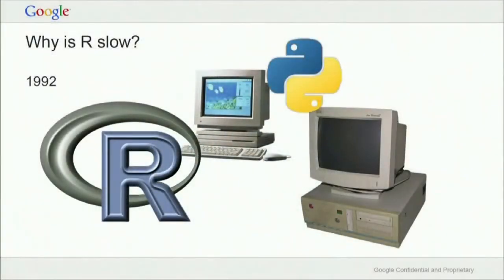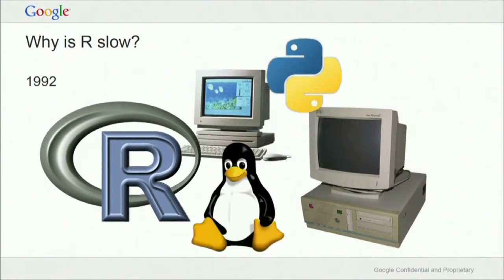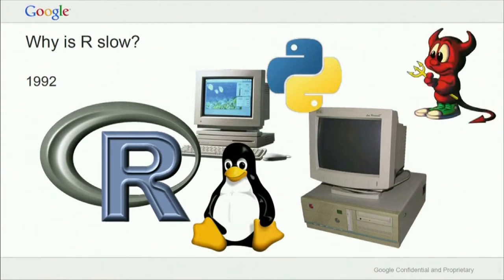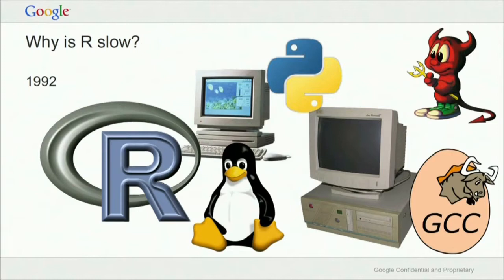So are we doomed? Not really. Python was being developed in 1992 and Python's performance is not bad. The Linux kernel dates from about the same time. FreeBSD, which modern Macs are based on, comes from well before that. As does the GCC compiler you compile your R with. These are all much older, and they've made the transition to work well on the computers we have today. So we need to do somewhat the same things.